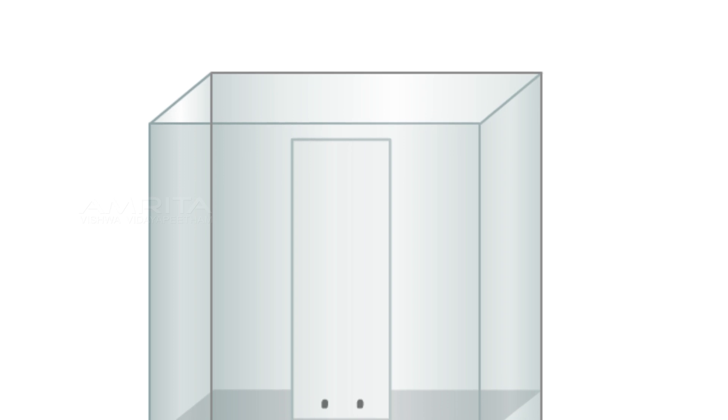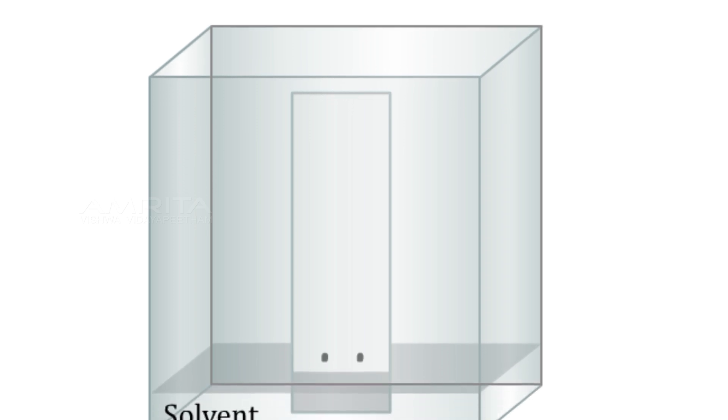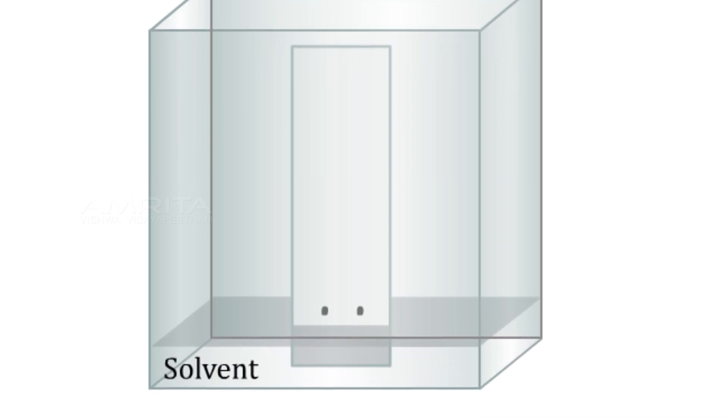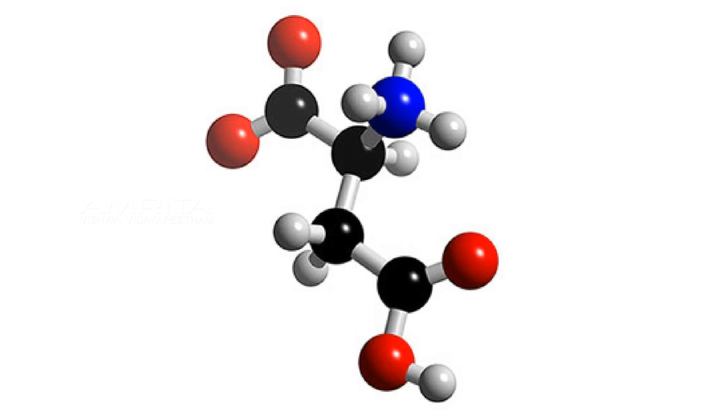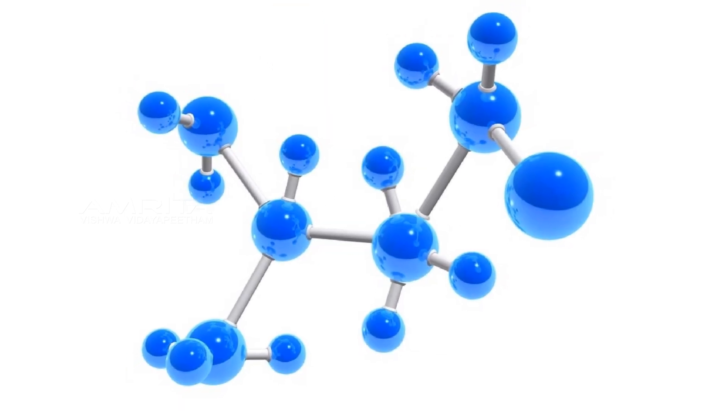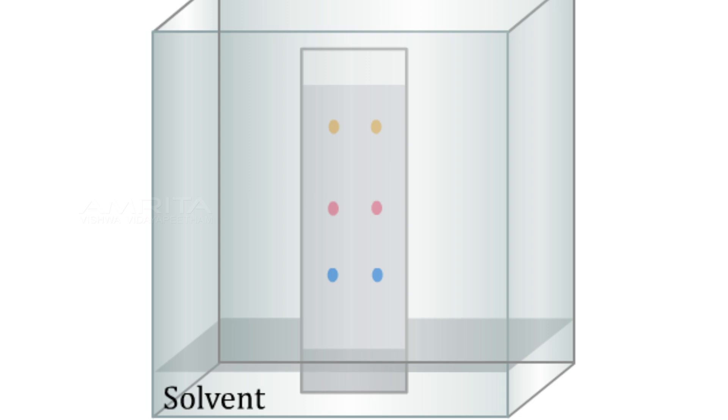Here, TLC or thin layer chromatography can be utilized to identify the different amino acids. Separation occurs as each component, being different in chemical and physical composition, interacts with the stationary and mobile phases to a different degree, creating the individual spots on the plate.